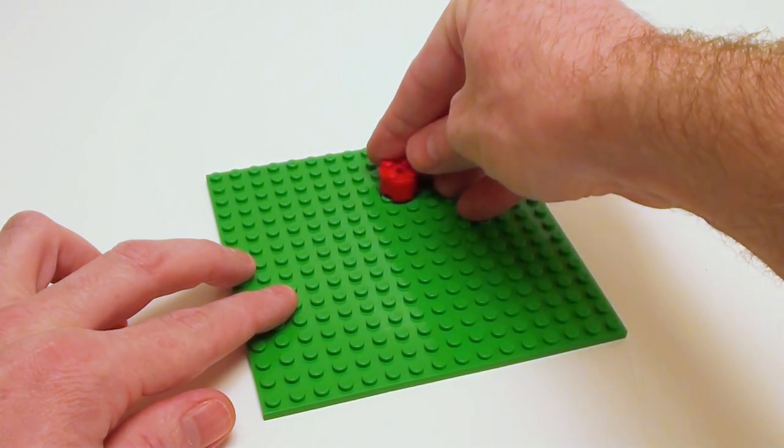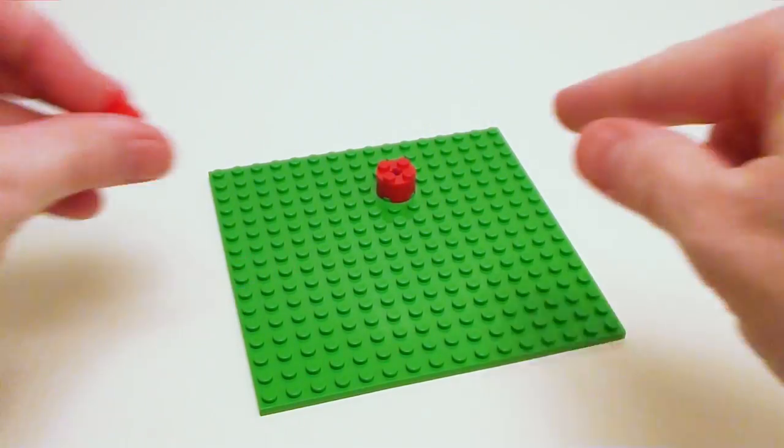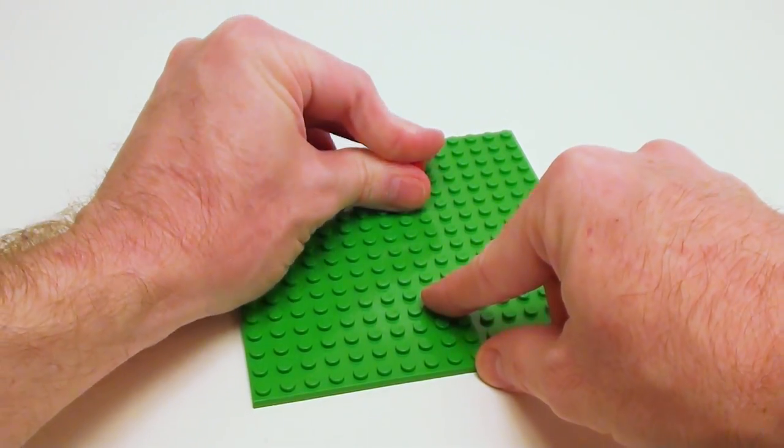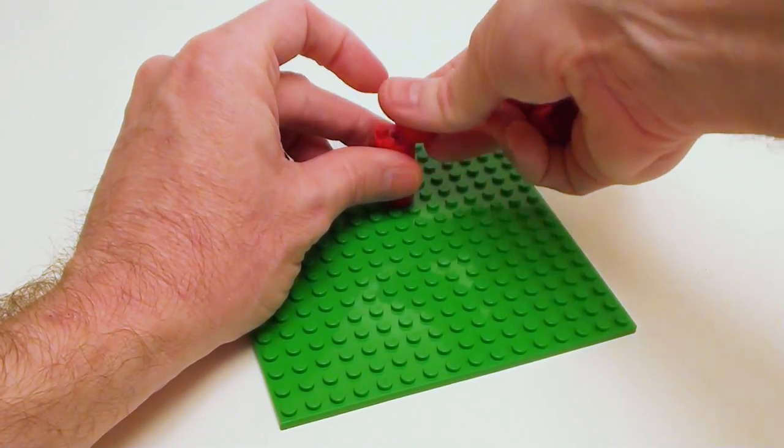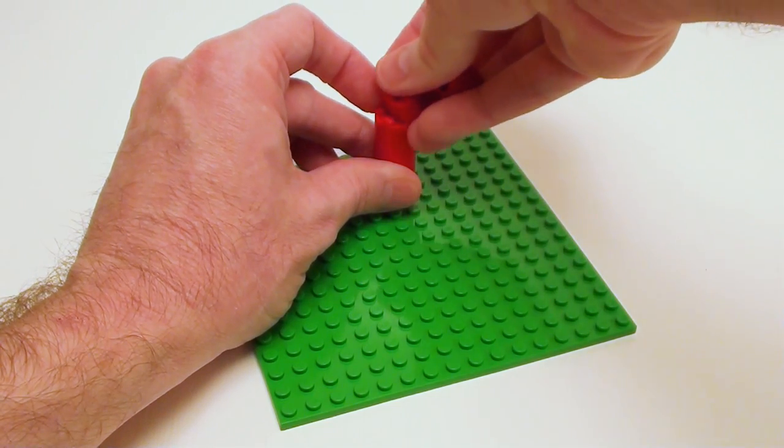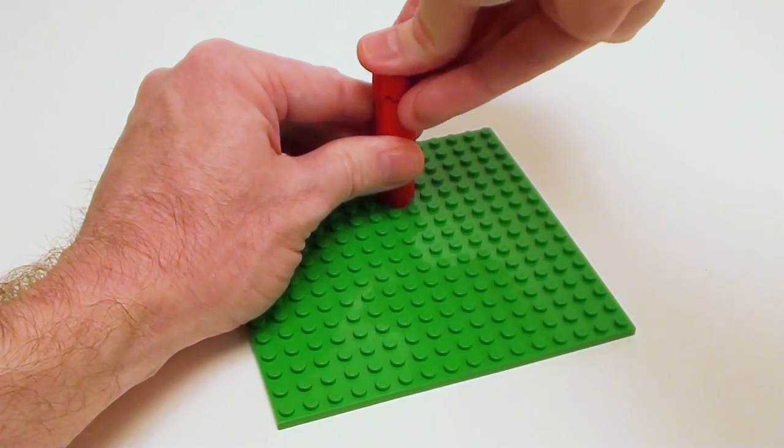I'm going to set down right here a 2 by 2 round brick. I'm going to take a few more and place them on top of one another. This is going to be the pillar that holds up the deck of the slide. There will be six of these in total.